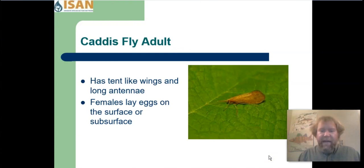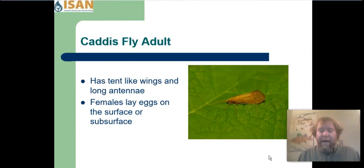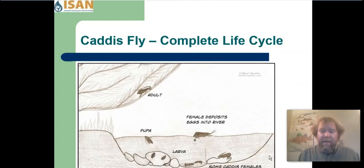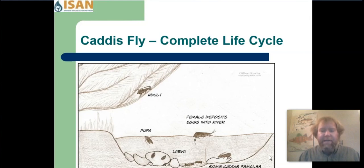This is a caddisfly adult. It has a tent-shaped wing over its back and long antennae. The females will return to the water to lay their eggs either on top of the surface, or some females will dive down under the surface to safely deposit their eggs on rocks, logs, or vegetation, ensuring the health and safety of their young. This picture shows the complete life cycle of the caddisfly — the larva live underwater, the gas bubbles carry the mature pupa to the surface, wings emerge, they fly to the trees to reproduce, and females return to deposit eggs on or below the surface.